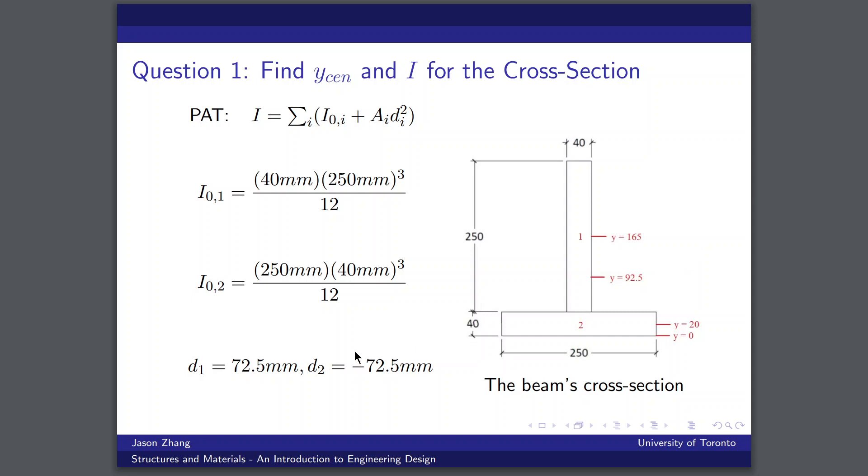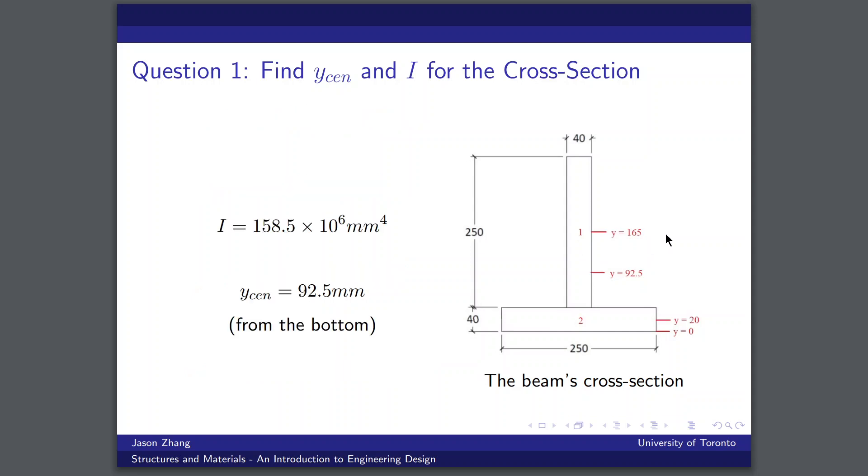So we do that for both of the rectangles and notice how the base and the heights are swapped between the two because they have the same dimensions just in different orientations. We can find d because we know the location of the global centroidal axis as well as the local centroidal axes for the rectangles. We'll find that they're the same in magnitude and we already know the area of each rectangle from the previous part. And so we can do the calculation and we find that the second moment of area for this entire cross section is approximately 160 times 10 to the 6 millimeters to the 4.